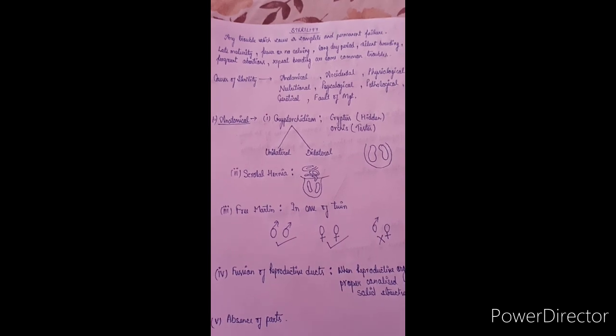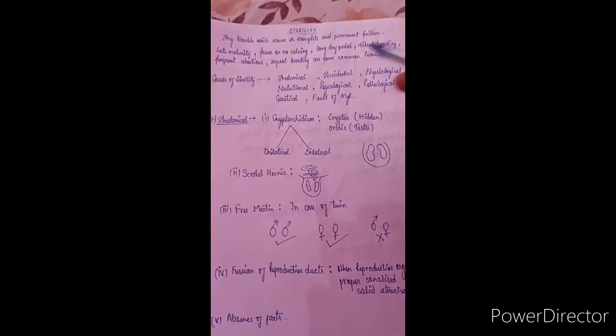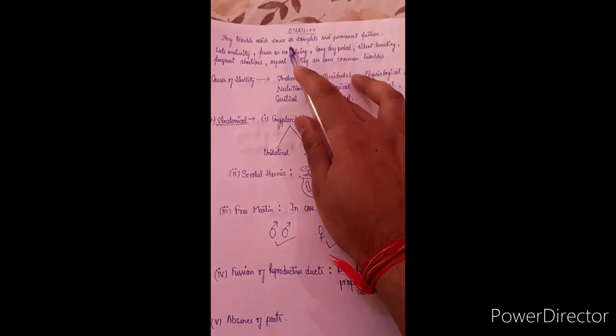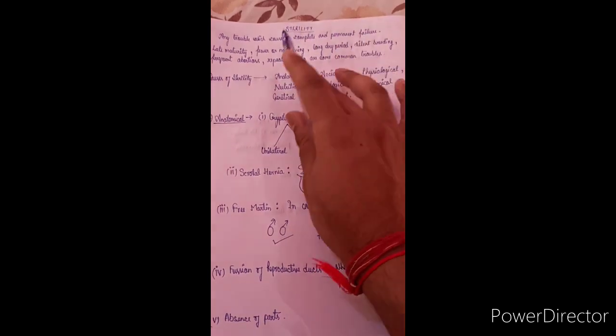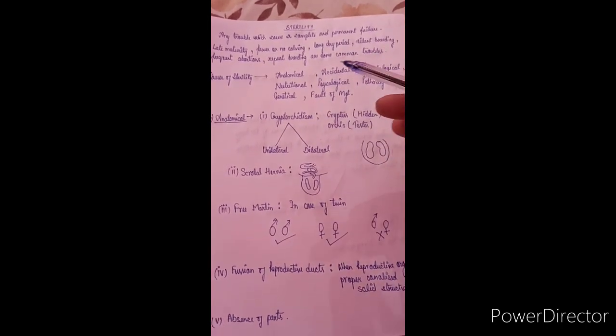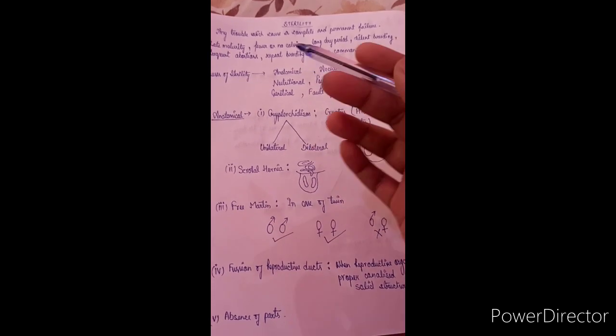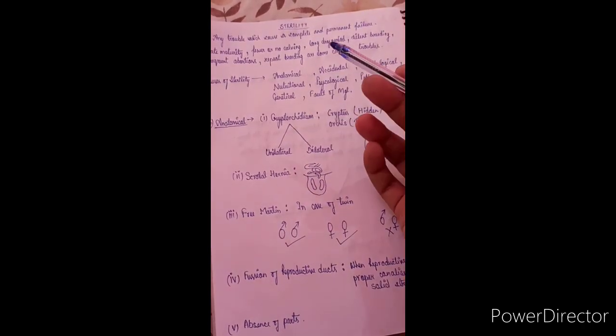Last time we were talking about the topic under livestock management — livestock production. Our topic was sterility. Any cause which results in complete and permanent failure of reproduction is known as sterility. In males, sterility is known as impotency, and in females it is known as sterility. There are many reasons behind sterility. First, let's discuss the signs, because on the basis of observing these signs we can know that our animal is going to be sterile.